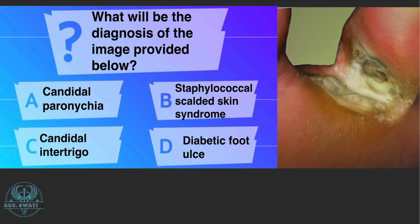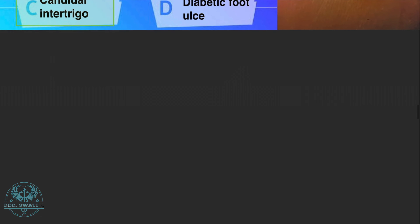Here is the last question of this episode. What is the diagnosis based on the image provided? Options: A) Candida paronychia, B) Staphylococcal scalded skin syndrome, C) Candida intertrigo, or D) diabetic foot ulcer. The correct answer is option C, Candida intertrigo.